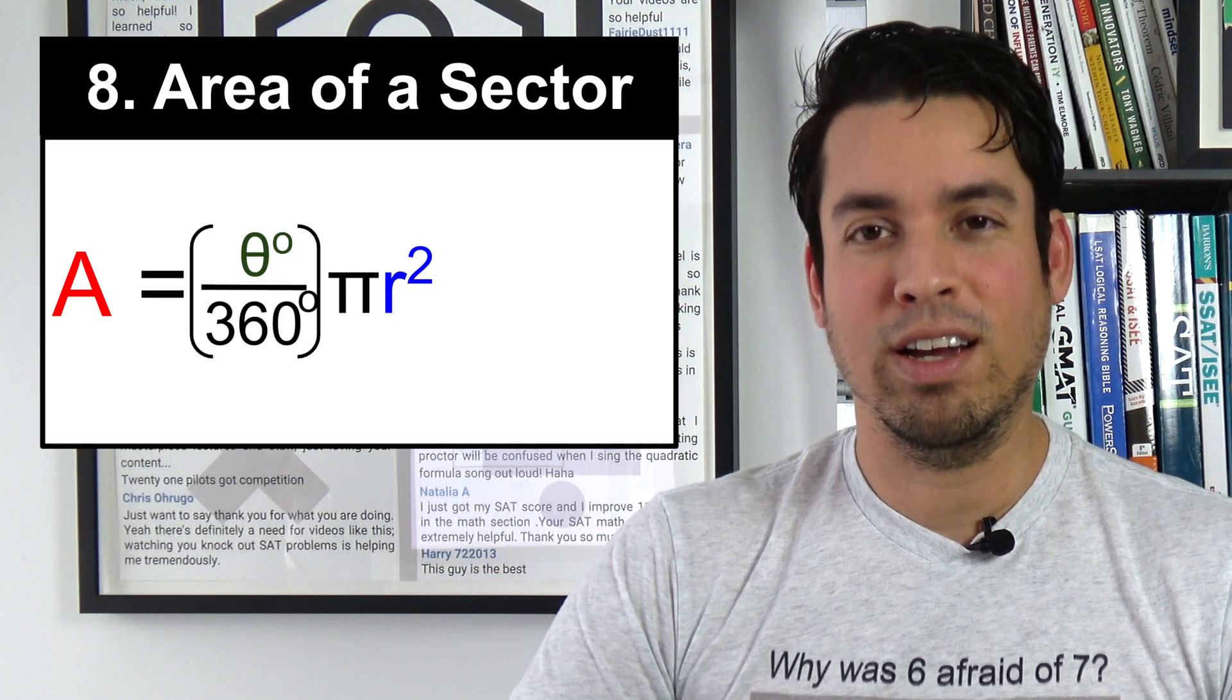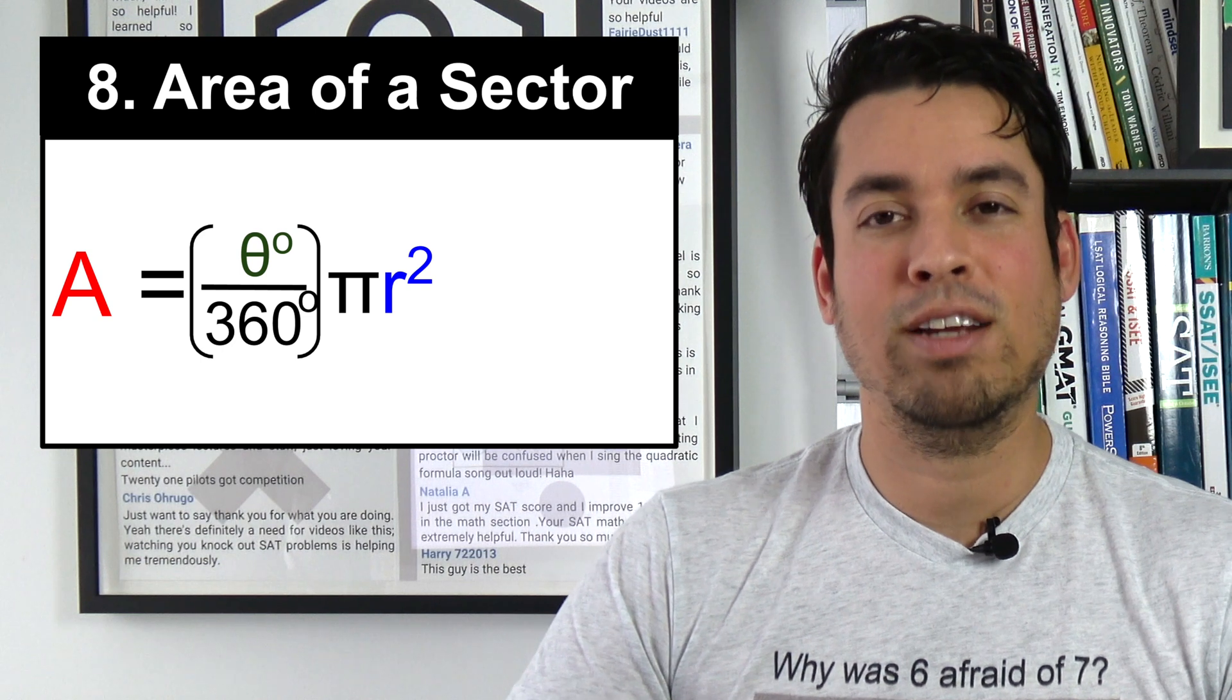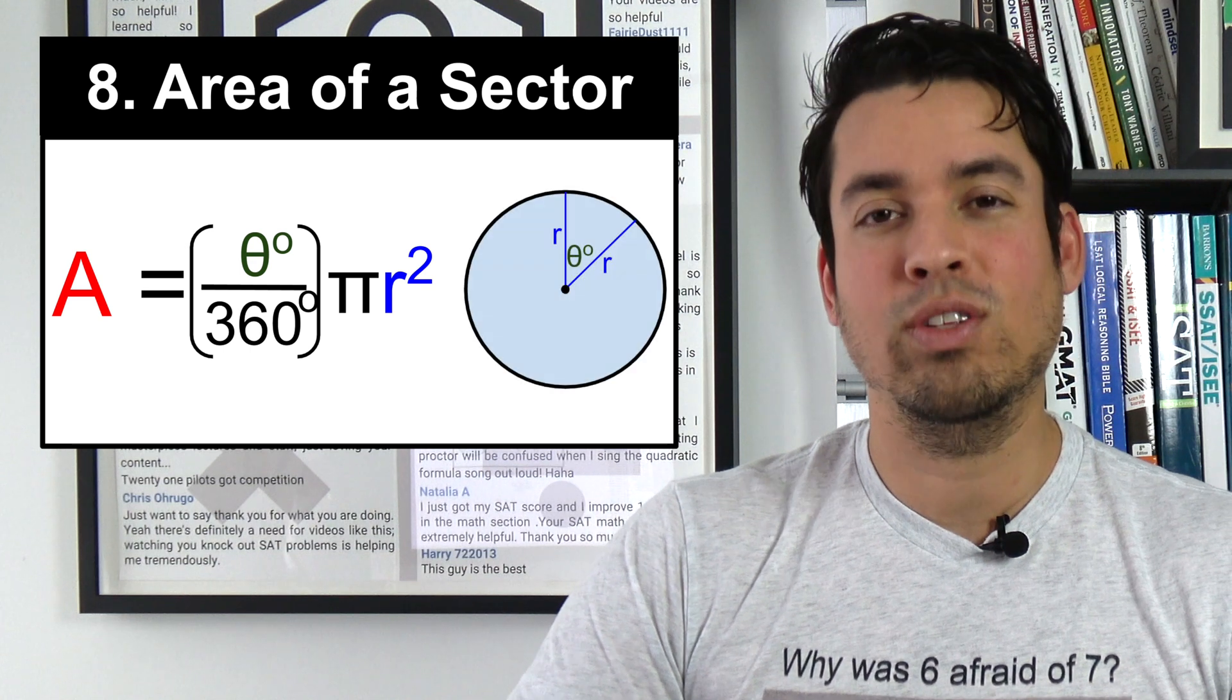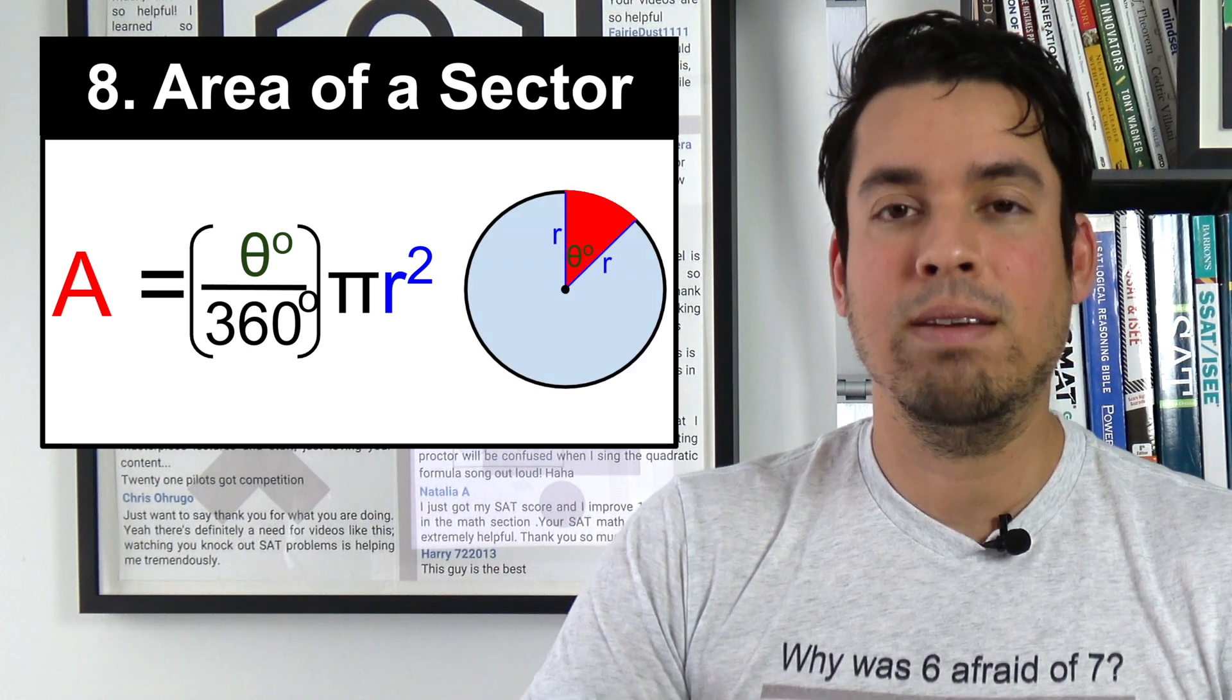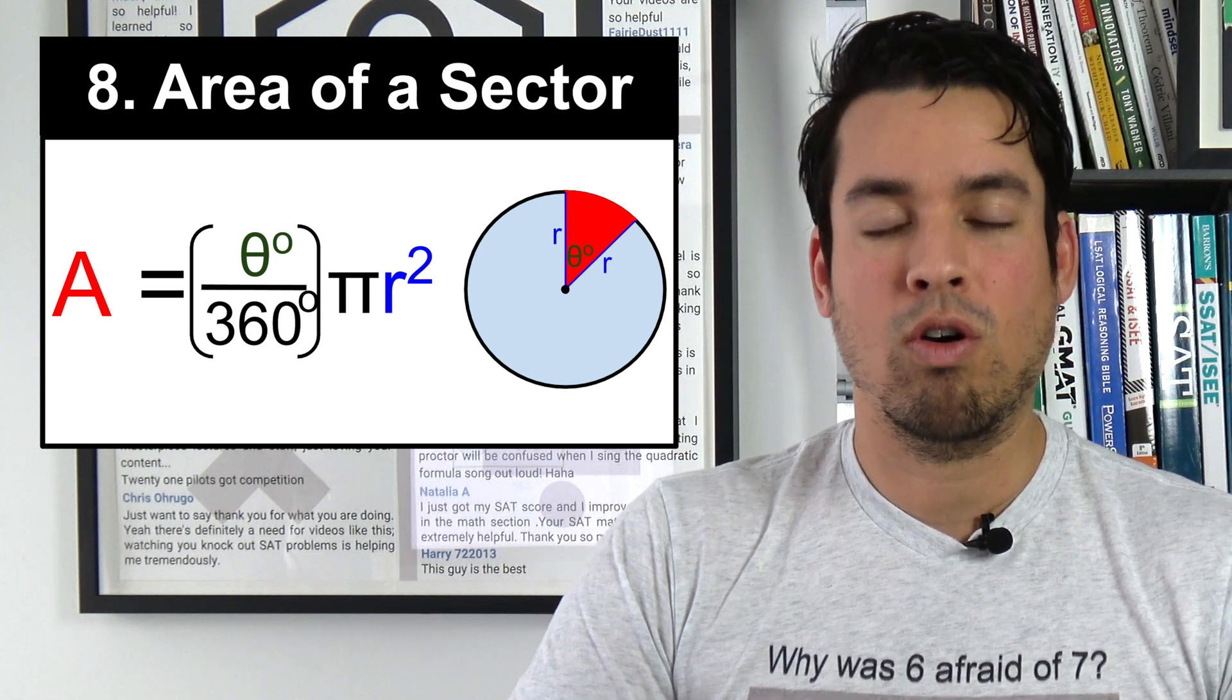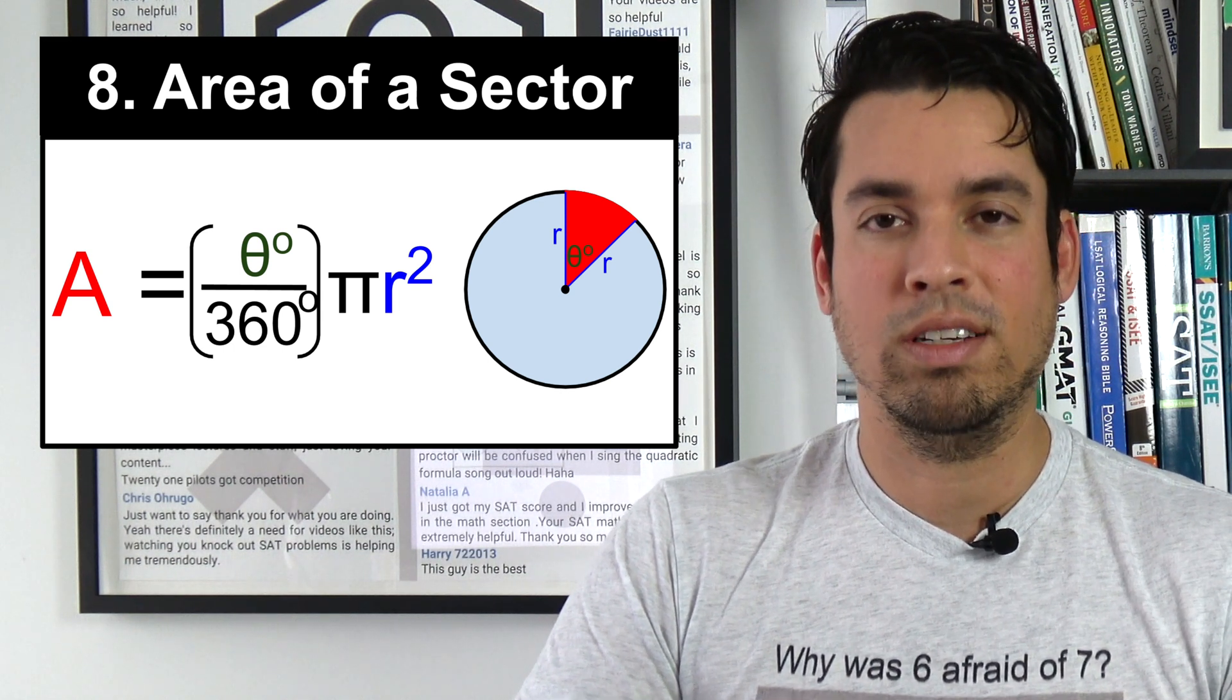Next on the list is area of a sector, and this is tied back to the area of a circle. What we're doing here is we're taking that central angle that cuts out the sector divided by 360 and multiply by πr², where of course again r is your radius.